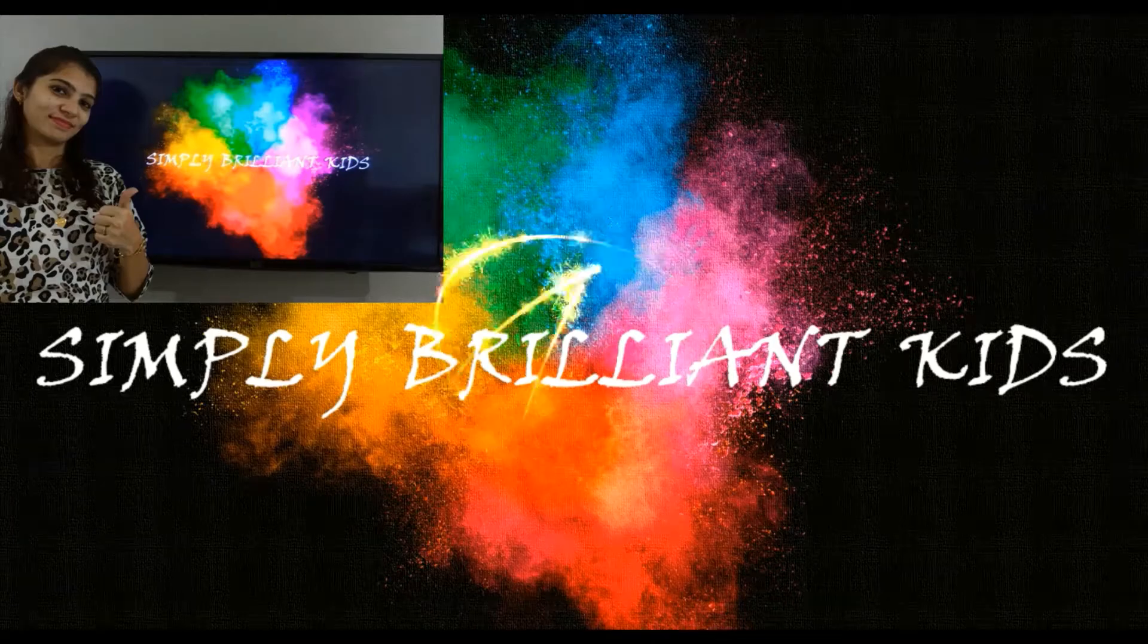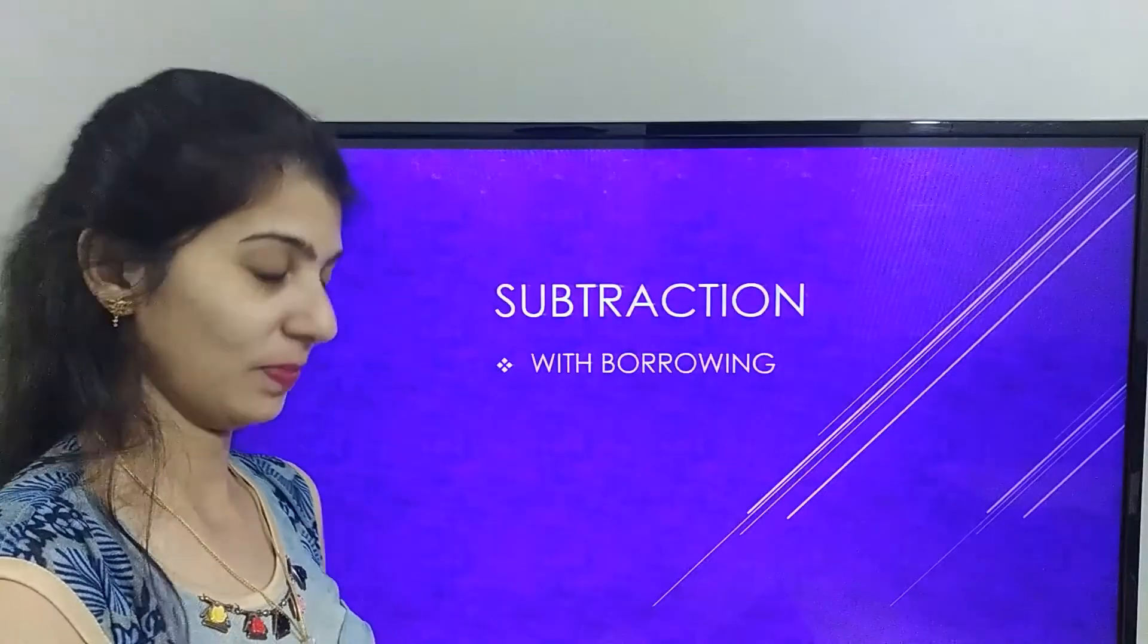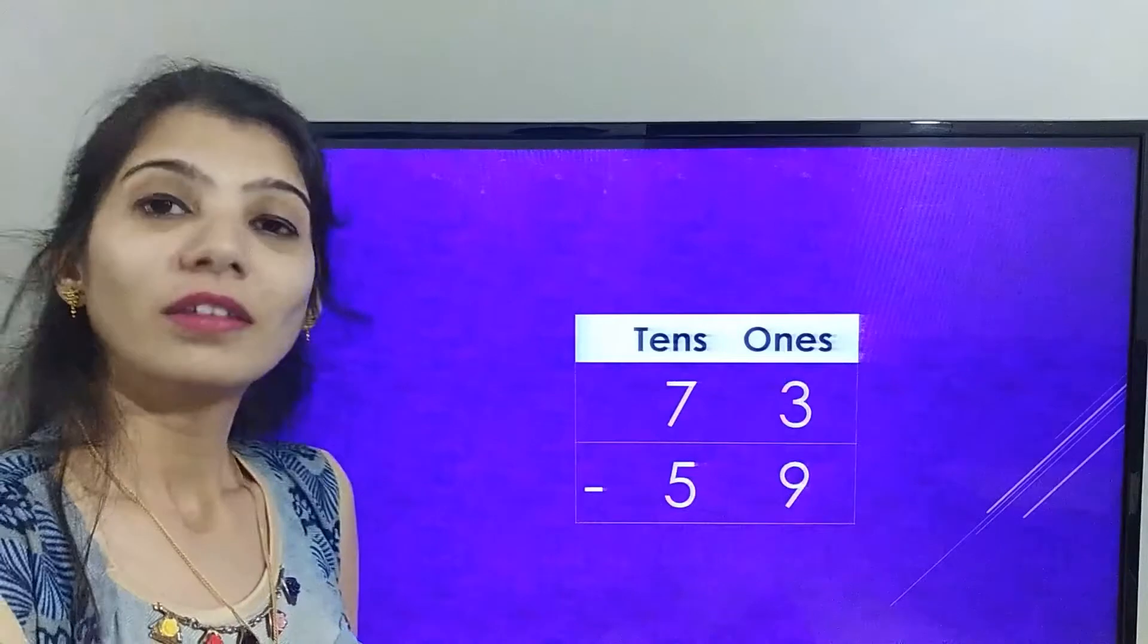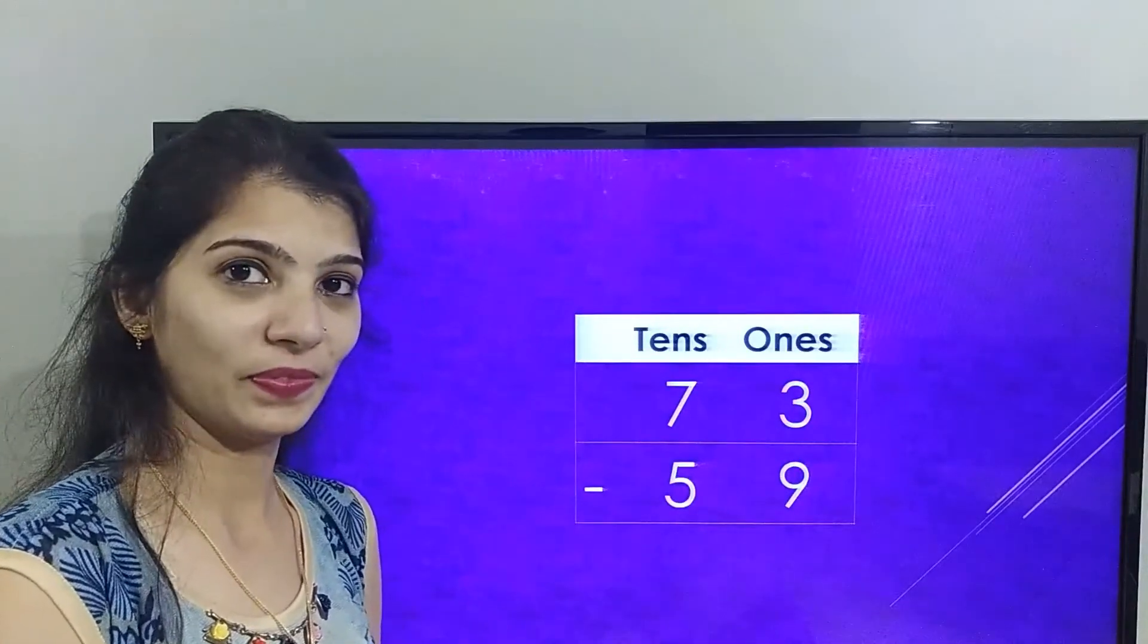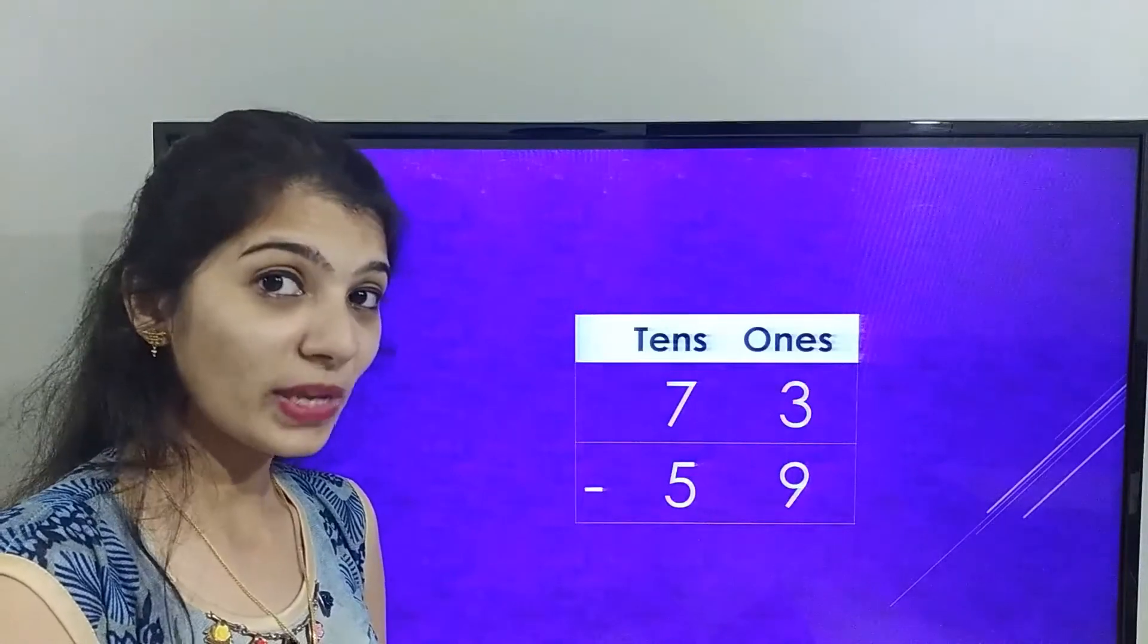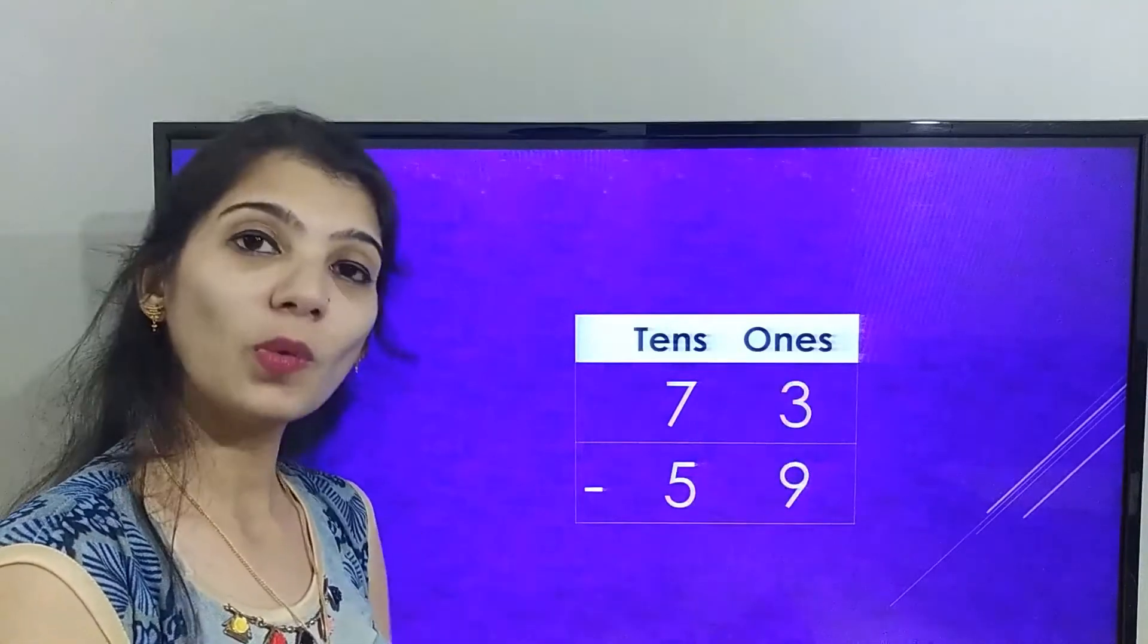Let's start. The number on the screen is 73 minus 59. It is always important to solve the ones place first, that is 3 minus 9.